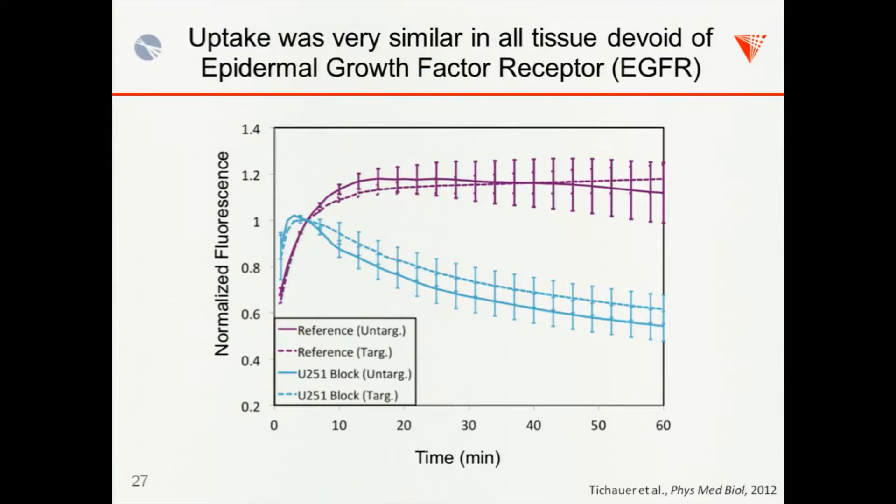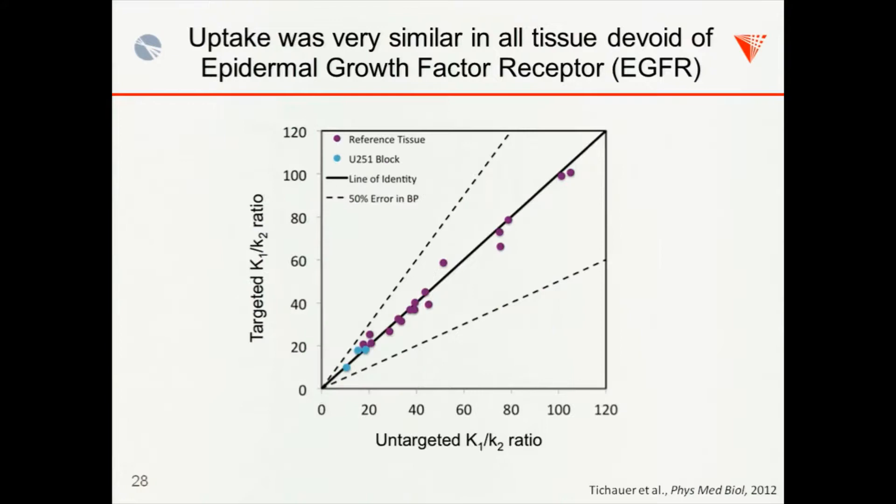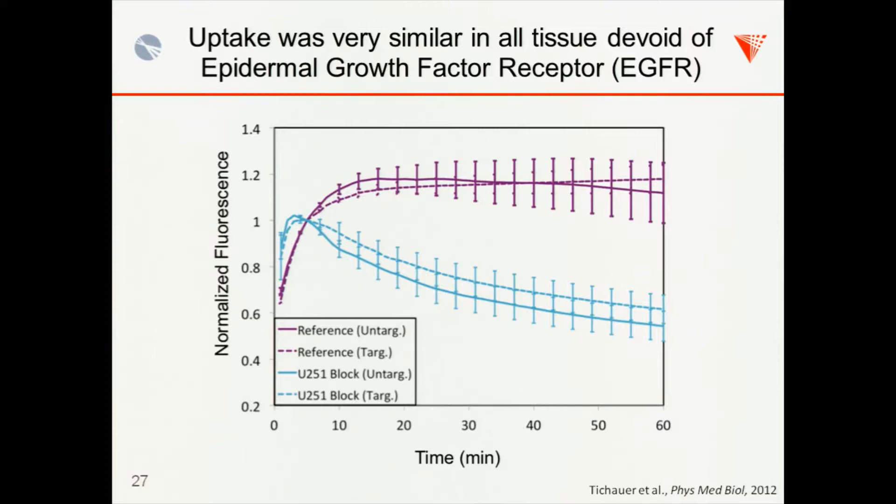And so testing this out then, we took our targeted tracer and untargeted tracer and looked at the uptakes in a, in reference tissue in this case. This is just leg muscle. So there shouldn't, we were targeting epidermal growth factor receptor, which is overexpressed in many different types of cancers. So there's very little epidermal growth factor or none in sort of healthy leg tissue. And so you expect if the K1 and K2 are similar, or if the untargeted tracer is ideal for this particular targeted tracer, that the uptake should be very similar over the time range that you're doing your kinetic modeling over. And that seemed to be the case in the leg muscle.